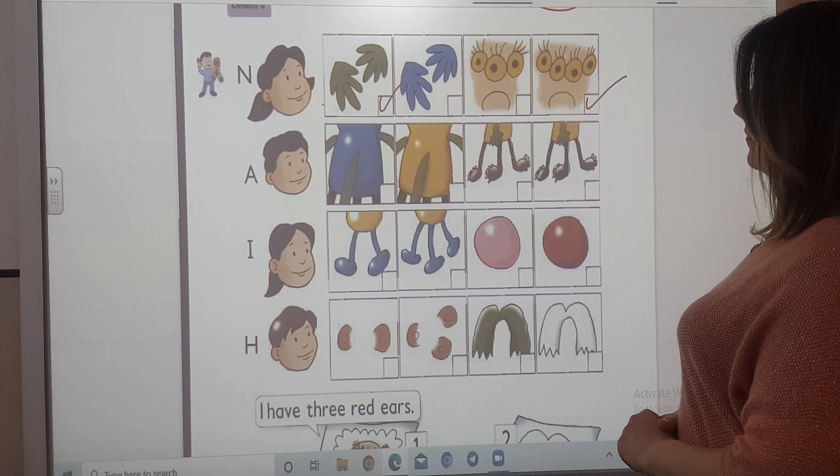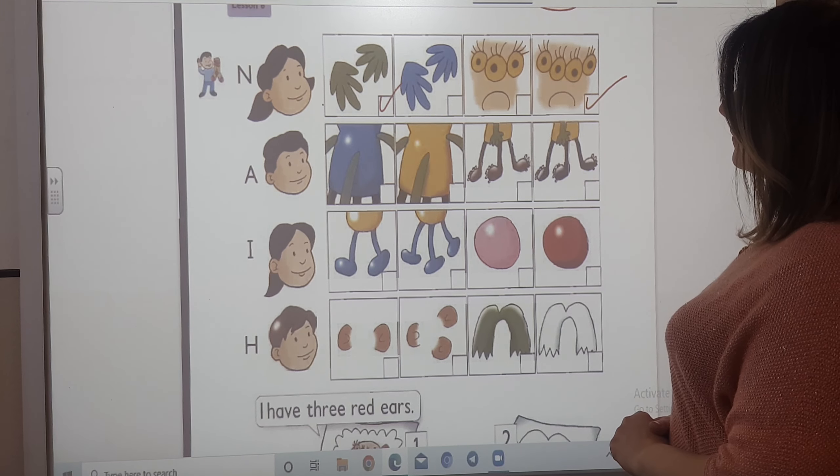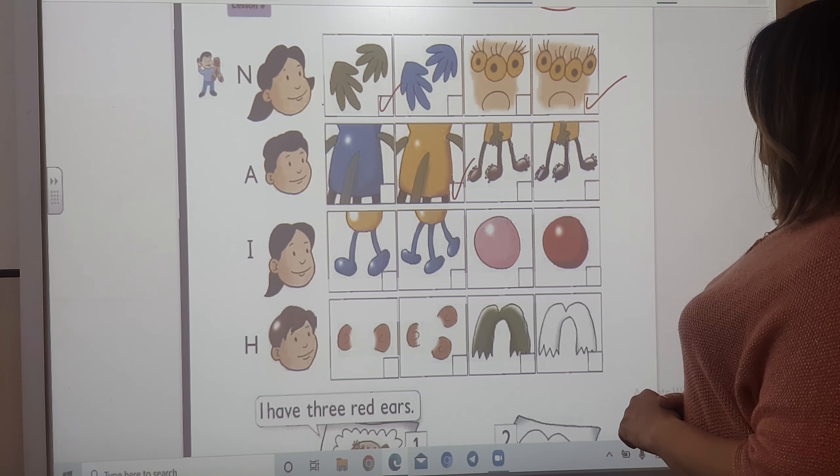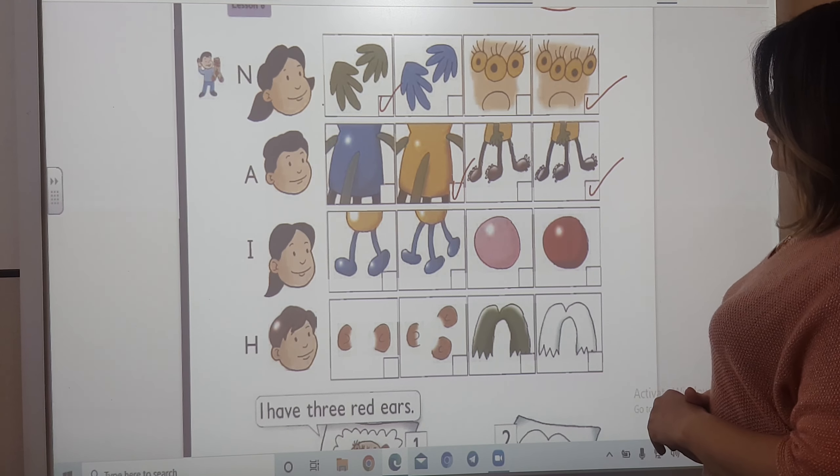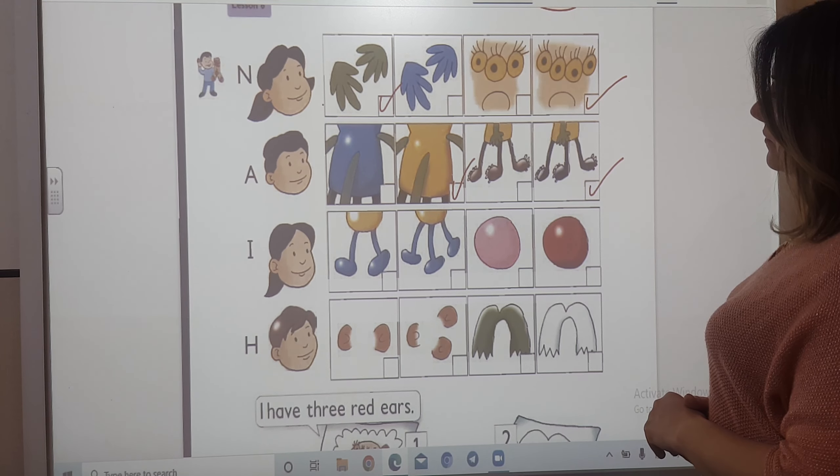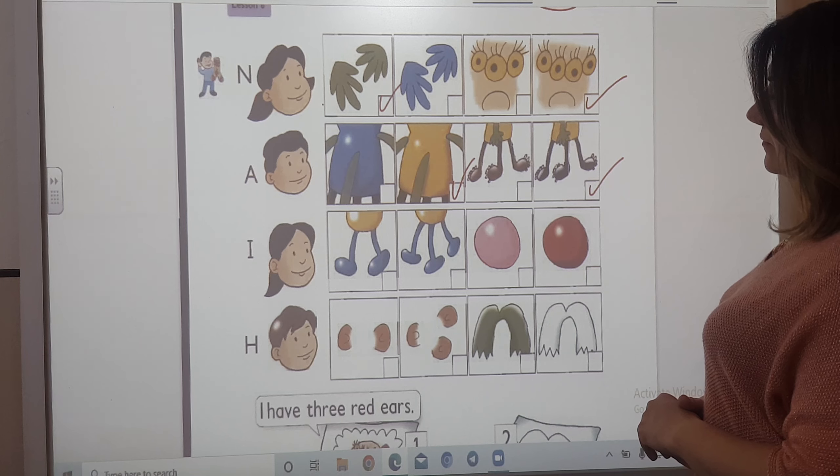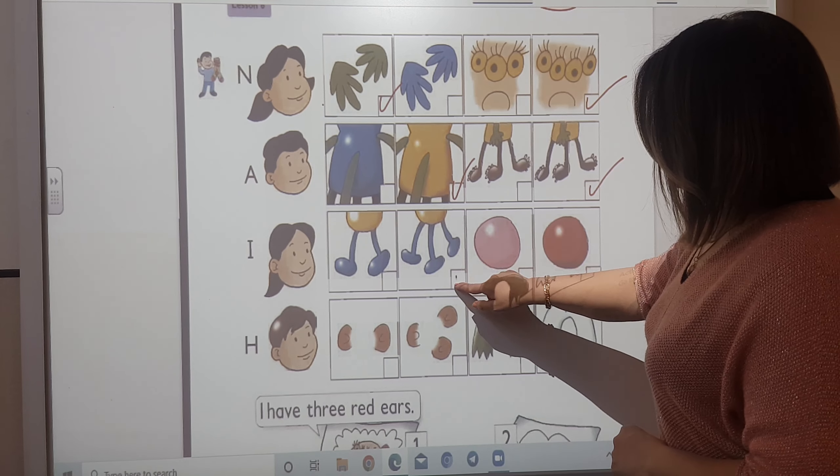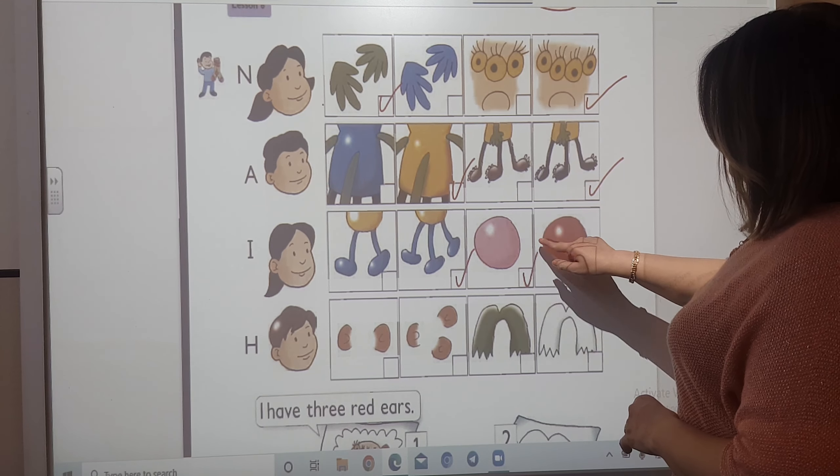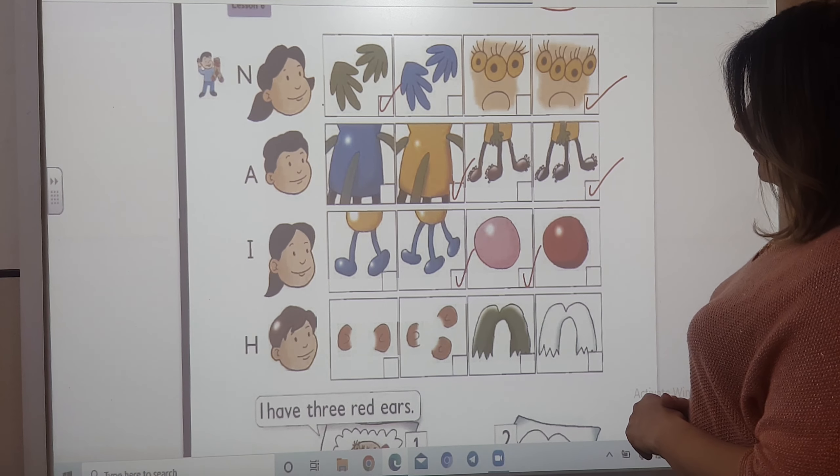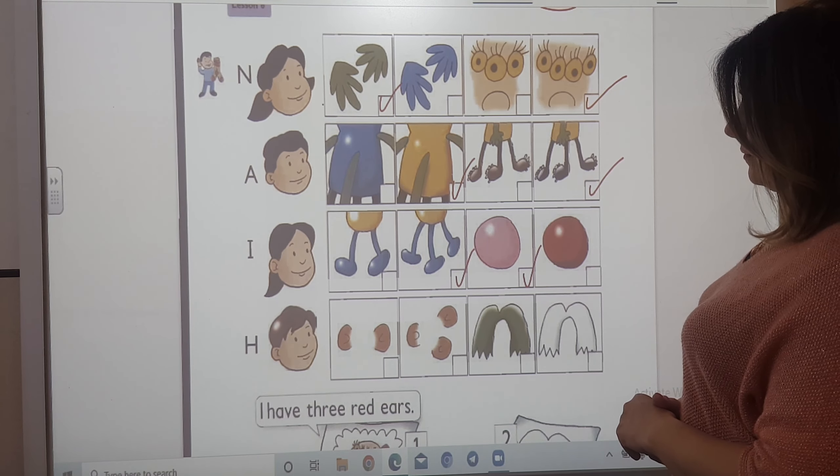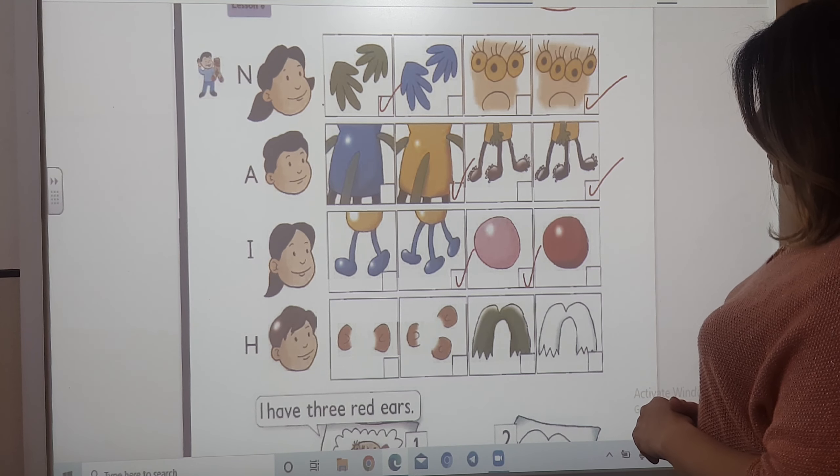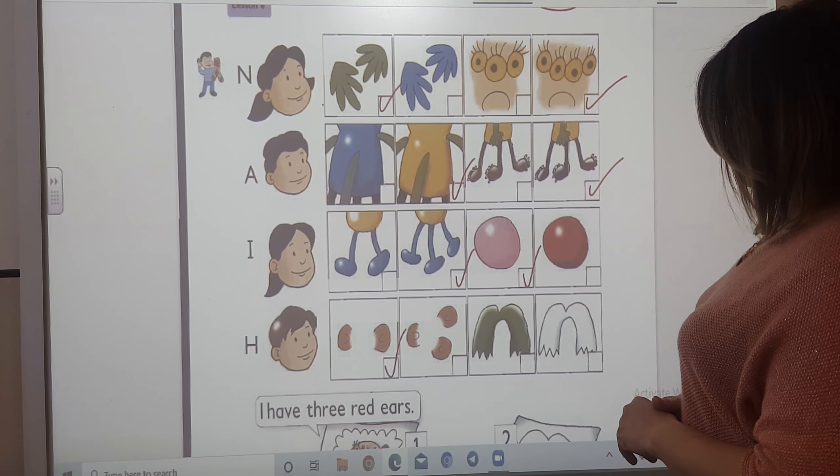Hello. My monster has a yellow body. My monster has three black legs. Hello. My name's Iman. I have a monster. My monster has three blue legs. He has a pink nose. My name's Hany. I have a monster. She has two orange ears and she has white hair.